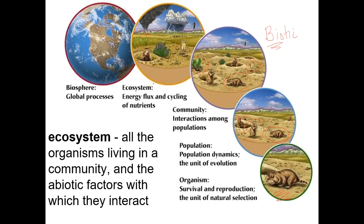An ecosystem is all of the communities plus the abiotic factors — all the biotic and abiotic elements together. When you put an 'a' in front of something it means 'not,' so it means all the living things and all the non-living things: the water, the soil, the air. A really huge ecosystem would be the biosphere — all areas of the planet where living things can exist.